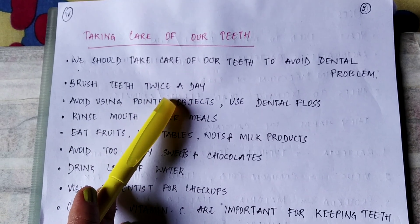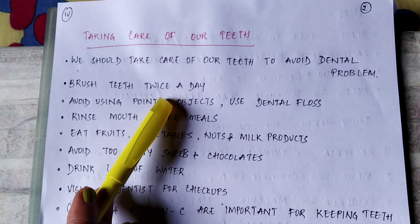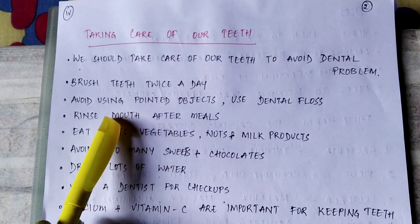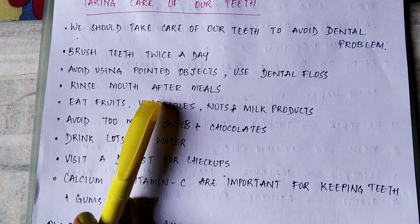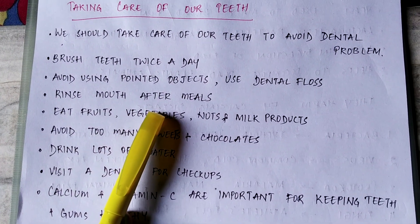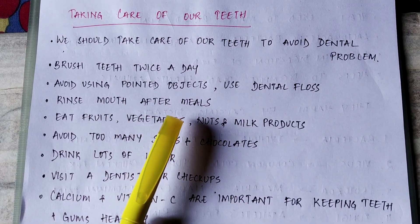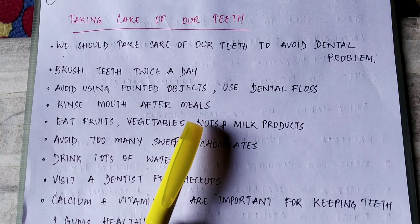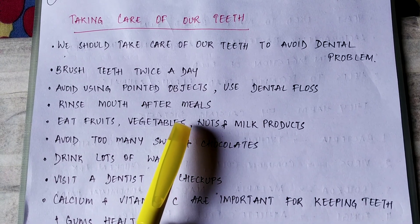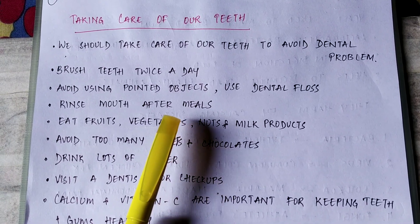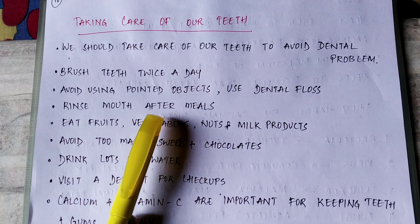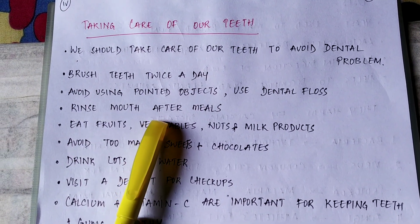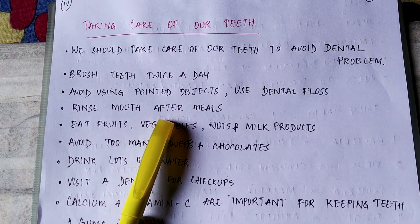Brush teeth twice a day to remove food particles that are stuck to your teeth. Avoid using pointed objects to clean gaps between teeth — use dental floss instead. Don't use sharp things as they may hurt your gums or teeth.